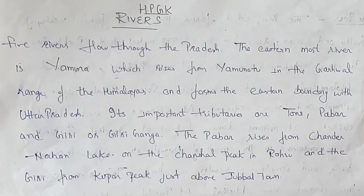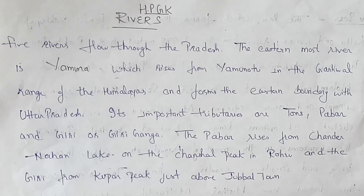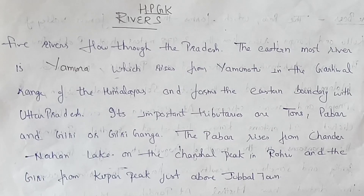Yamuna forms the eastern boundary with Uttar Pradesh. It rises from Yamunotri in the Gharwal range of Himalayas and makes its boundary with Uttar Pradesh. Its important tributaries are Tones, Pabar, Giri and Giri Ganga.